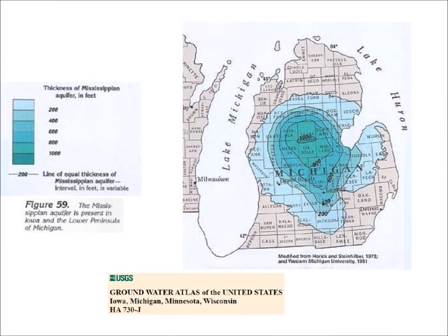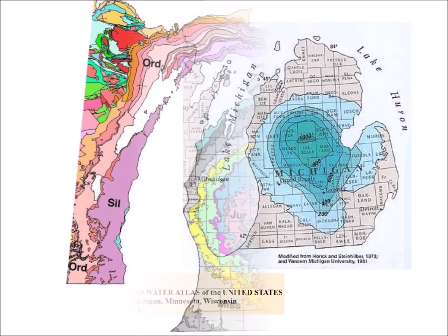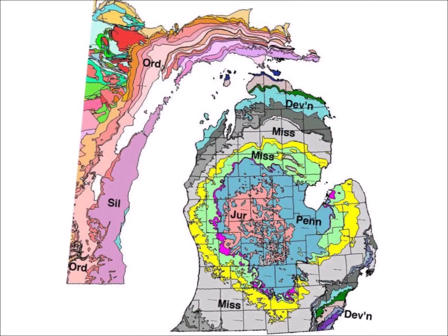The Mississippian aquifer is present in Iowa and the lower peninsula of Michigan. The aquifer has a circular shape that is concentric with the Niagara Escarpment. The rocky geology of the Michigan Peninsula also has the same circular pattern as the aquifer, with the youngest strata in the center and older strata forming concentric rings.